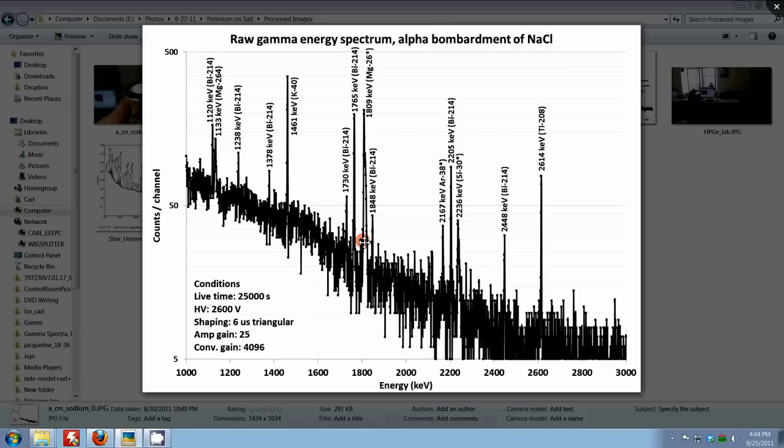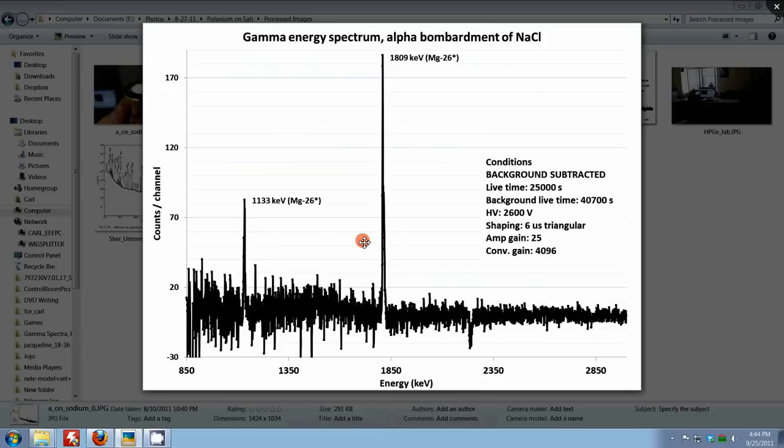Let's subtract the background now. Here we are with background gone. You'll notice a lot of those peaks from bismuth and so forth are now gone. And we're left with two prominent peaks. One here at 1809, magnesium-26 de-excitation peak out here. Another one at 1133 keV. And then there's one negative going peak. This is probably, in my view, due to bombardment of aluminum in the detector can, which occurs when the bare, unsalted alpha source is put against the can. So that's an interesting case of a negative peak.